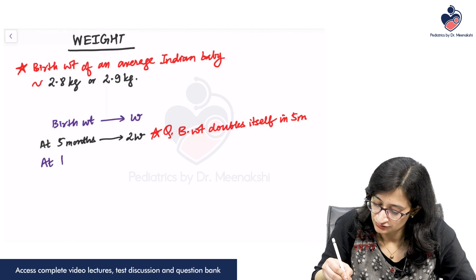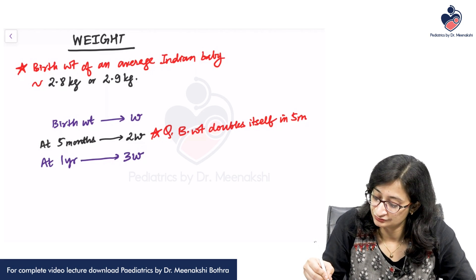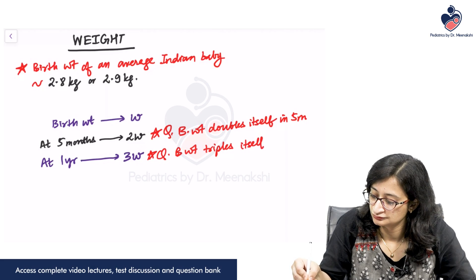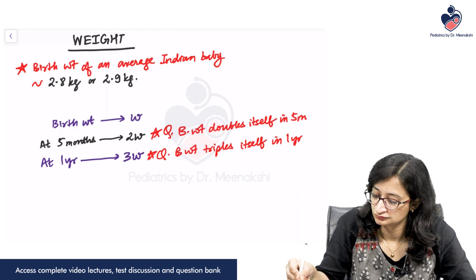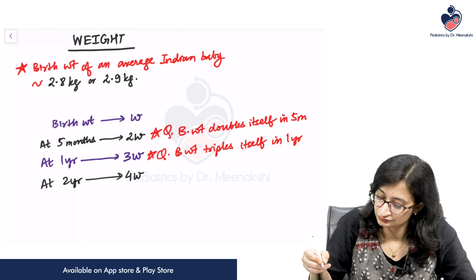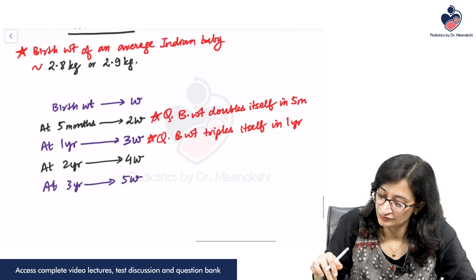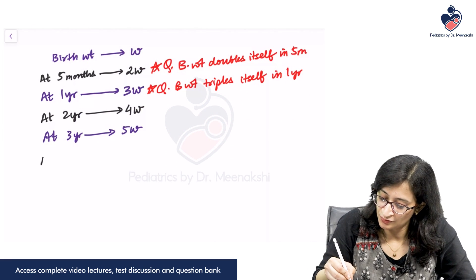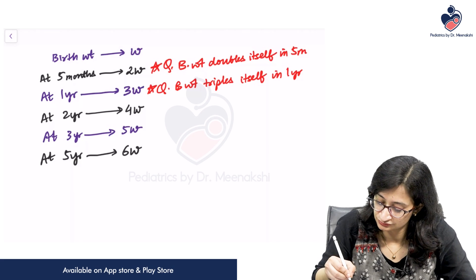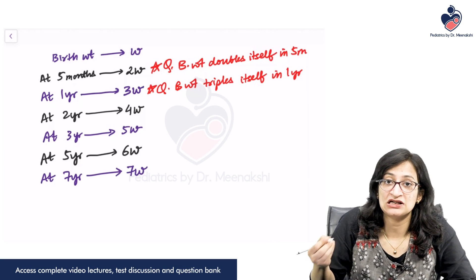At around 1 year of age, the weight becomes 3W — so birth weight triples itself in 1 year. At 2 years, it becomes 4 times the birth weight. At 3 years, 5 times the birth weight. At 5 years, approximately 6 times the birth weight. At 7 years, 7 times. And at 10 years, approximately 10 times the birth weight.